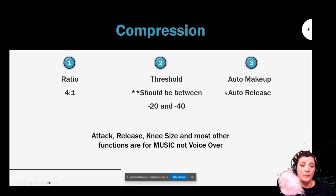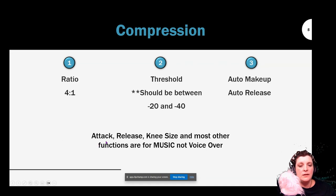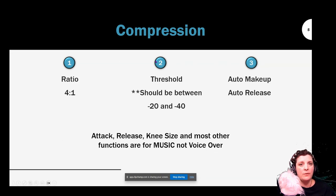The third thing you should look for on your compressor is auto-makeup and auto-release. Not all of them have these two, but if they do, you want to check those. In ReaComp for Reaper, they have a weird knee — make sure that's never checked because that will make your voice wobble. The other things on your compressor — attack, release, knee size, and any other feature — are for music production, not voiceover. Leave them at the default settings and just move on. All you want is your ratio, your threshold, and your auto-makeup and release set. Once you do that, your sound is going to be vibrant.